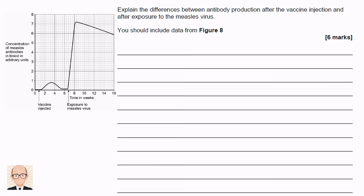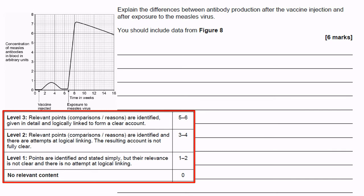Now on to the actual question. We've got to explain the differences in antibody production after the vaccine and after the exposure to the virus. These six-mark questions are not marked in the same way as other questions. There is a level of response marking grid that examiners use, with four different levels. Top marks are awarded where the answer contains relevant points written in a clear, logical and detailed way. A lack of logical step-by-step thought or inclusion of irrelevant statements will lose you marks.